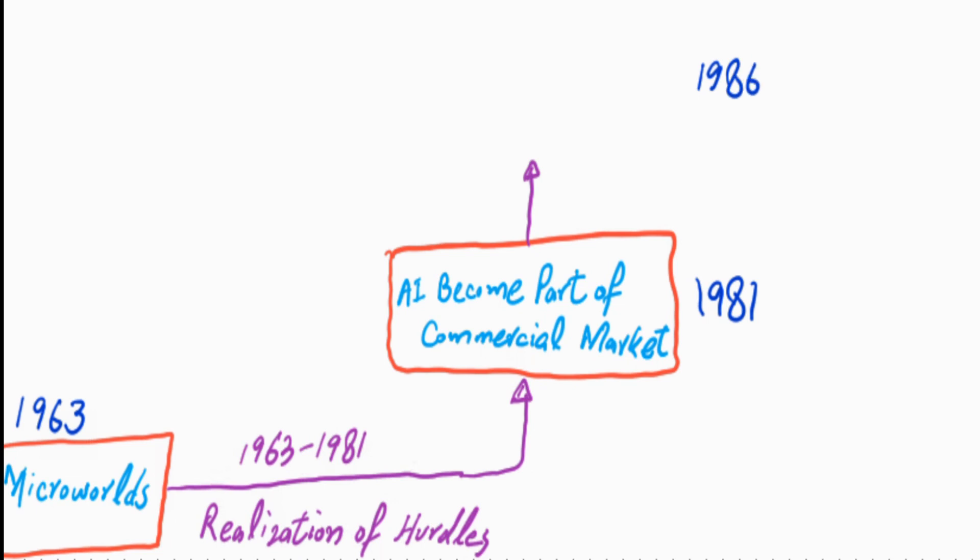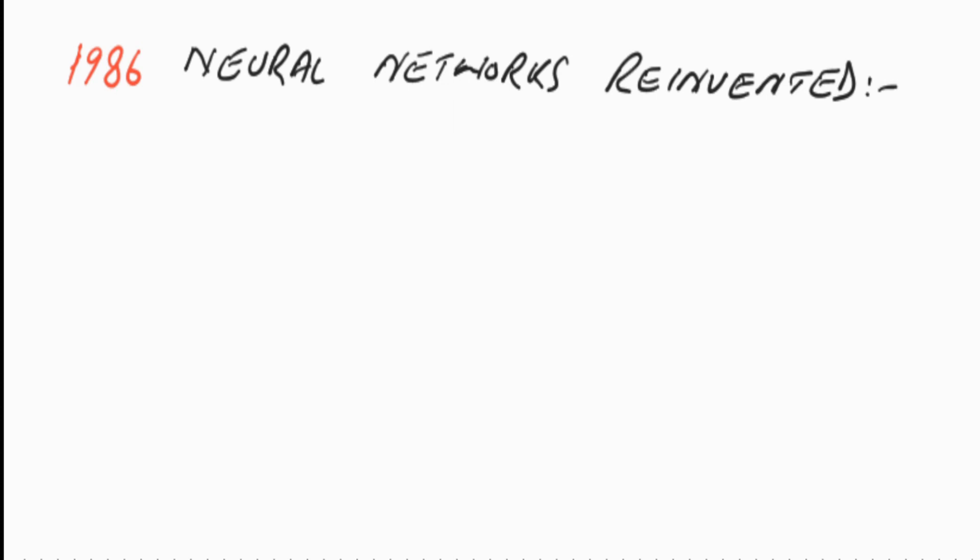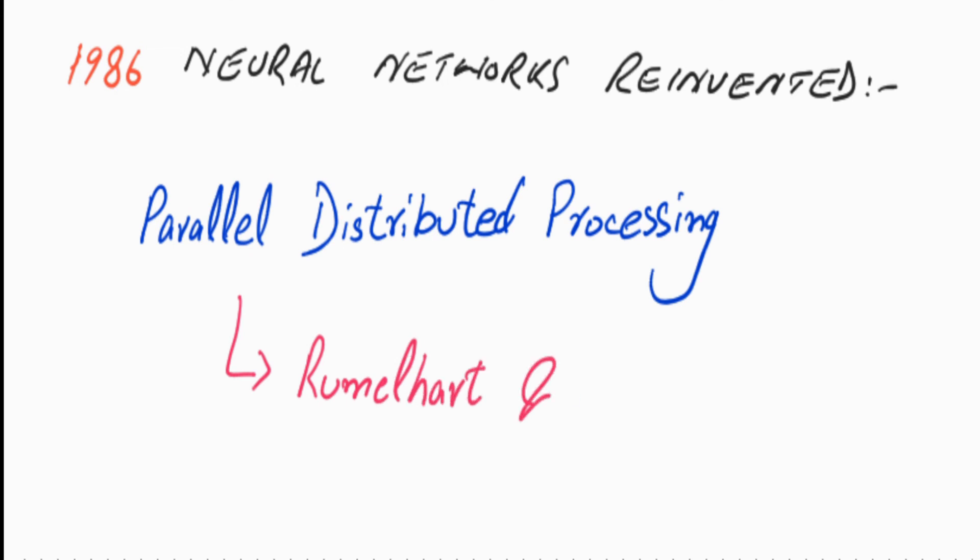Then in 1986, neural networks were reinvented. In the 1980s, at least four different groups reinvented the basic backpropagation learning algorithm, which was first found in 1969 by Bryson and Ho. Widespread use of the algorithm resulted in parallel distributed processing by Rumelhart and McClelland in 1986.